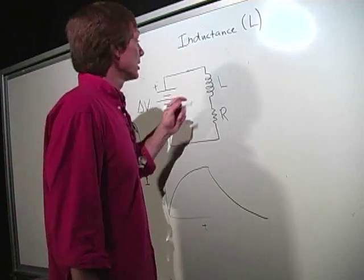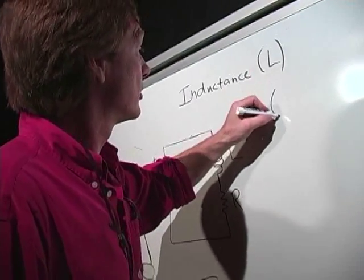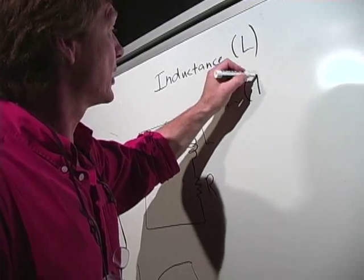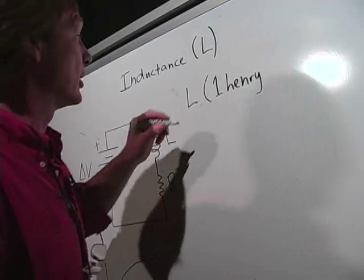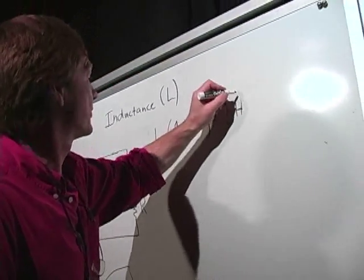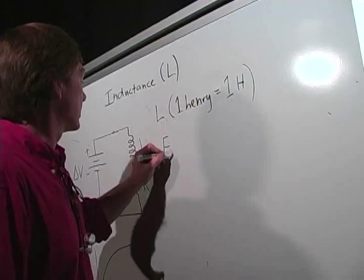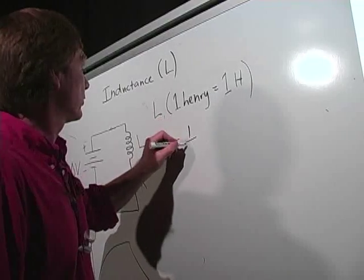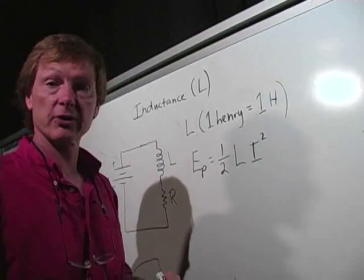Now, the inductor's units, the unit of the inductor is the Henry, named after Joseph Henry, who was an American scientist in the 19th century. That's 1H. And the potential energy stored in an inductor is 1/2 the inductance times the current squared.